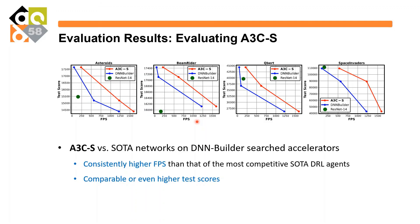Evaluating A3CS in terms of task accuracy, test scores, and hardware efficiency measured as frames per second, A3CS generally outperforms the baselines in a better performance frontier. For the baseline comparison, we accelerated three baseline networks on a state-of-the-art accelerator, DNBuilder. For ResNet-14, we used that structure with our own accelerator search engine. A3CS generally leads to a better performance frontier in both test scores and frames per second.